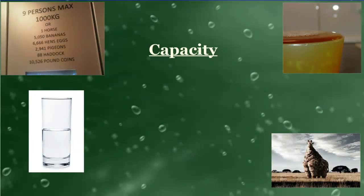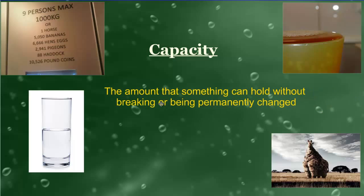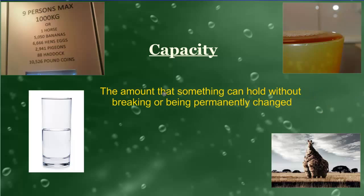Capacity is used in a few different ways as you can see in the pictures. In the upper right-hand corner the liquid inside the glass is right at the top — we are at capacity. The upper left-hand corner defines what it will take to meet capacity. If you look at capacity as it's defined, it's the amount that something can hold without breaking or being permanently changed.